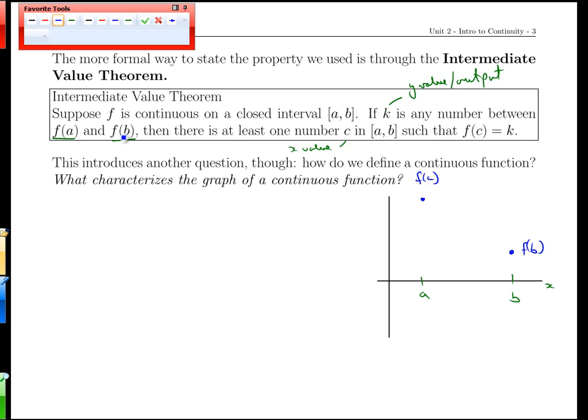k is any number between f(a) and f(b). So what we have on this side, we could actually write it out as f(b) and f(a) here. And then k is any number you want to pick in between here. For illustration, I'll just pick this number, this value here.